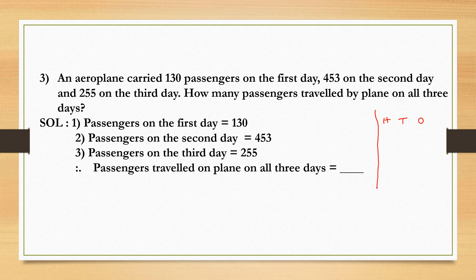And let's write the numbers here: 130, 453, and 255. So here we need to add. Add the numbers: 5 plus 3, 8. Now let us add the tens place. 5 plus 5, 10. 10 plus 3 is 13. Carry 1, write here 3.